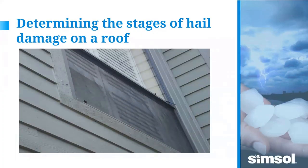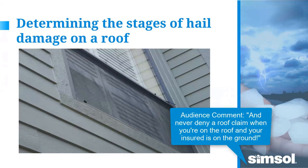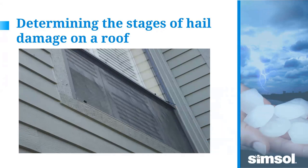When photographing window screens, sight down along the side at a sharp angle — not straight on — to show indentations better. For roof photography, never walk backwards on a roof. Take photos from far away, then creep in three or four steps at a time. I shoot right to left consistently so anyone reviewing my photos can follow the sequence. Treat it like an interior inspection — consistent direction around the entire structure.